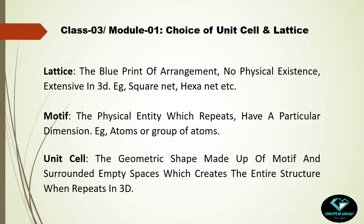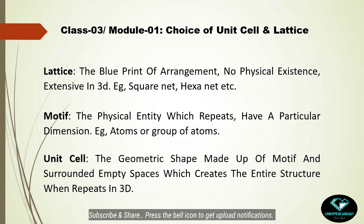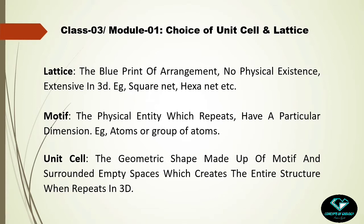Before going to the main topic, we need a recall session from the last class. Lattices were the blueprint or basic plan of arrangement of atoms — they had no physical existence. They are extensive in three dimensions, meaning they extend to infinity. For example, a square net has a square grid pattern, while a hexanet has a hexagonal pattern. The motif is the physical entity that is actually repeating, such as an atom or a group of atoms.